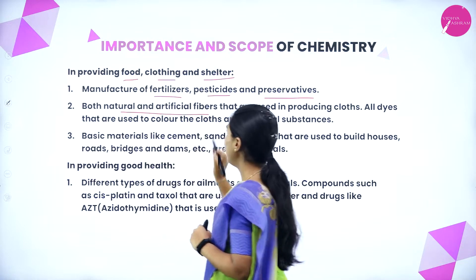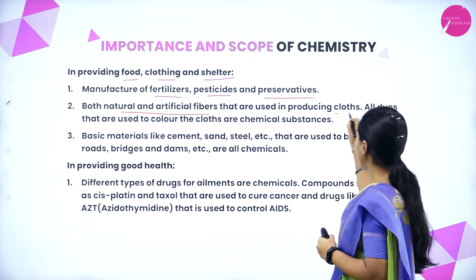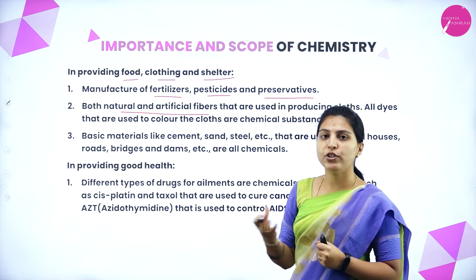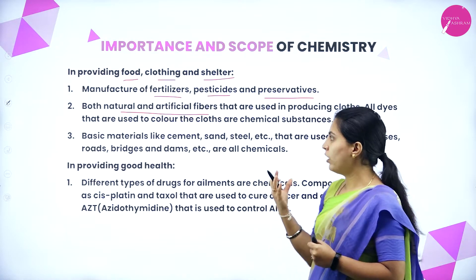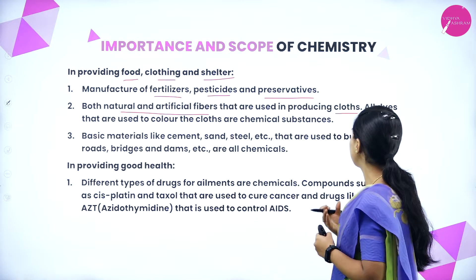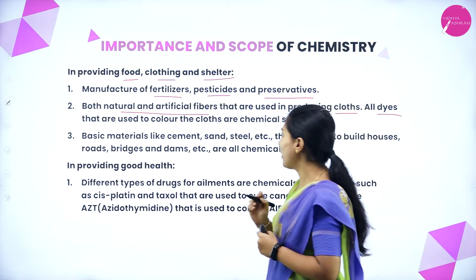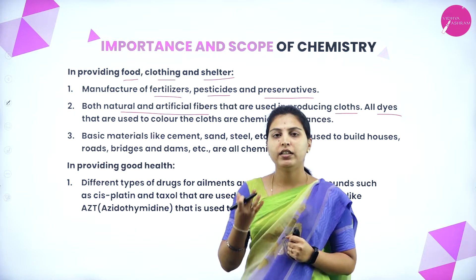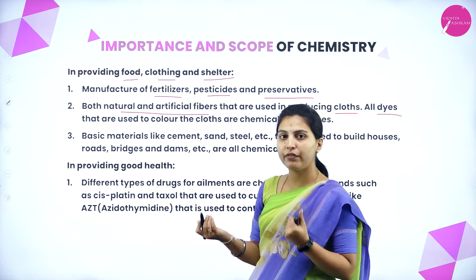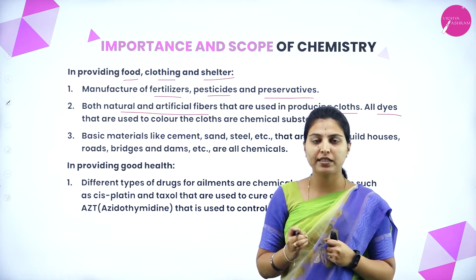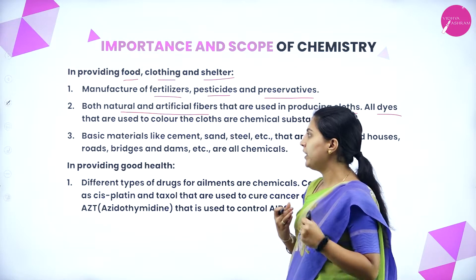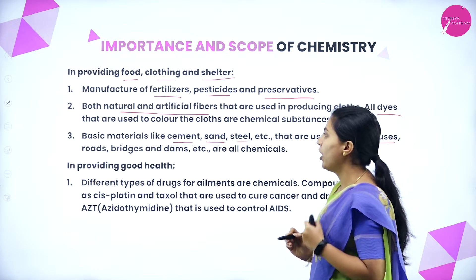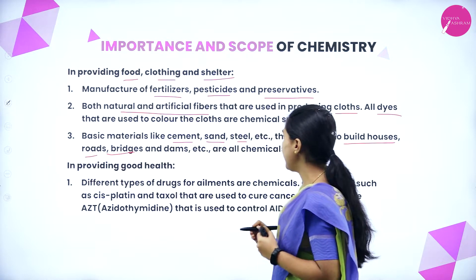Both natural and artificial fibers used in producing clothes have been produced or modified using chemistry. All dyes used to color clothes are chemical substances — synthesized in industries. Basic materials like cement, sand, and steel used to build houses, roads, bridges, and dams are all chemicals.